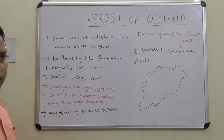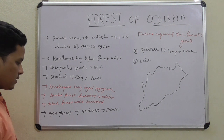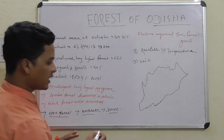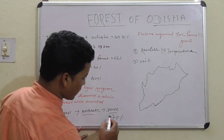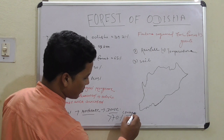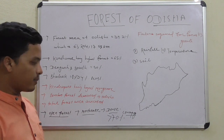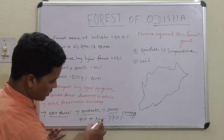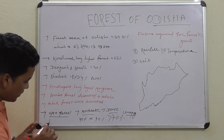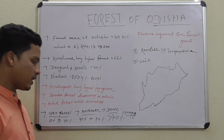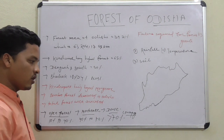The forest report for India has already been discussed in earlier videos. In Odisha, the highest category is open forest, followed by moderate forest, and then dense forest. Dense forest means canopy cover of more than 70%, moderate forest is 40 to 70% canopy cover, and open forest is 10 to 40% canopy cover.